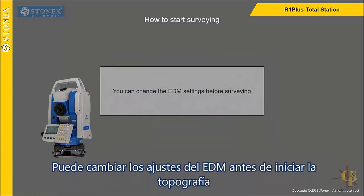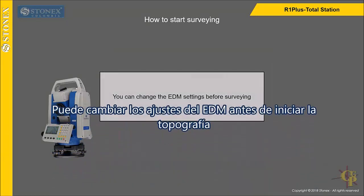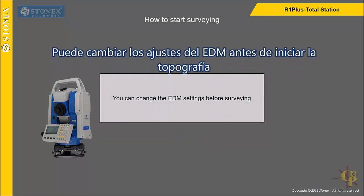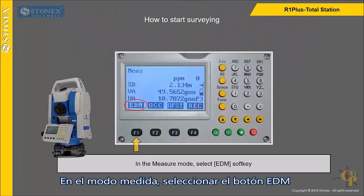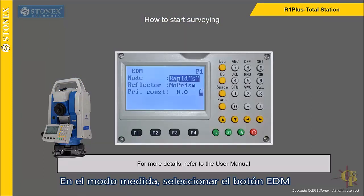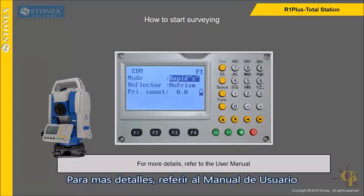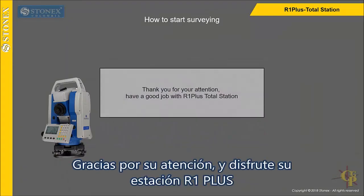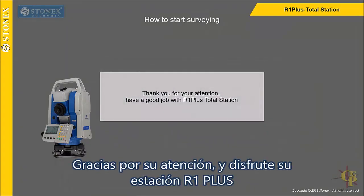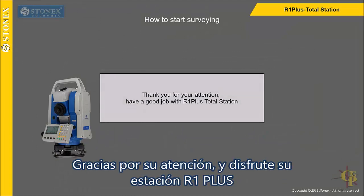You can change the EDM settings before surveying in the measure mode. Select the EDM soft key. For more details, refer to the user manual. Thank you for your attention. Have a good job with our total station.